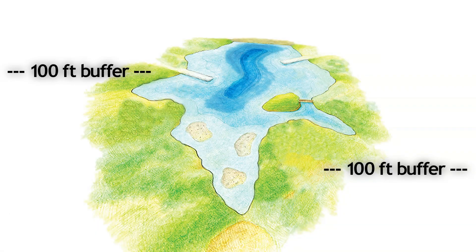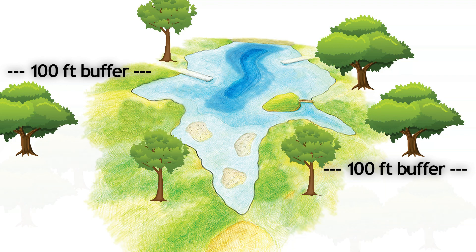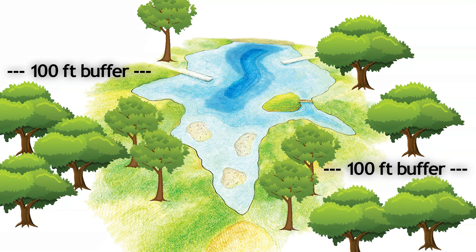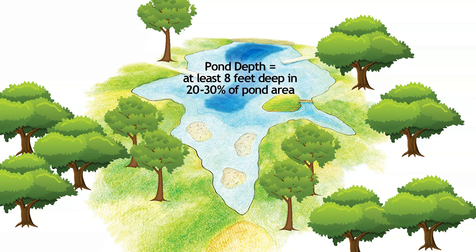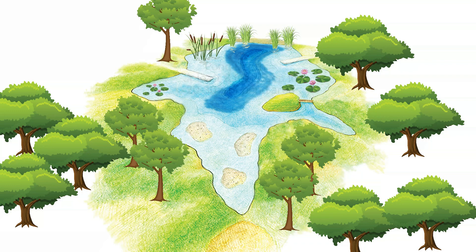Establish and maintain a 100-foot or wider buffer strip of grass and trees around the pond's edge. A well-constructed pond should have adequate depth with a diverse aquatic plant community using good quality rooted plants covering 30 to 40 percent of the shoreline. These plants compete for nutrients and reduce algae's ability to grow.